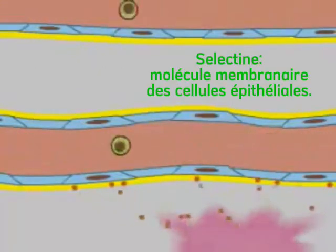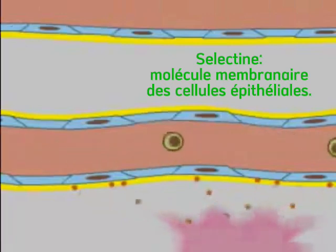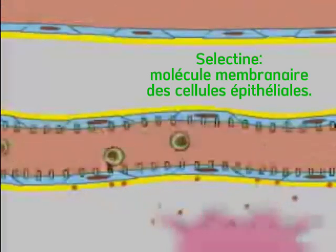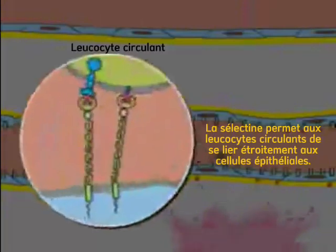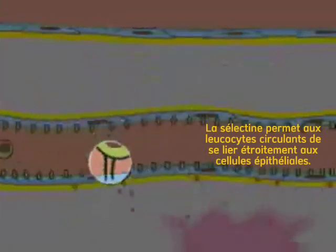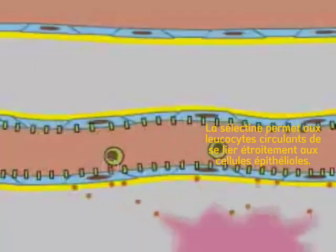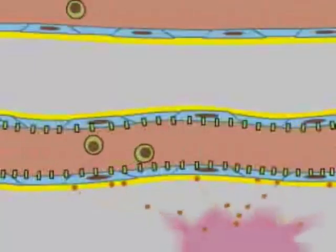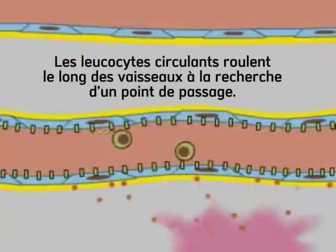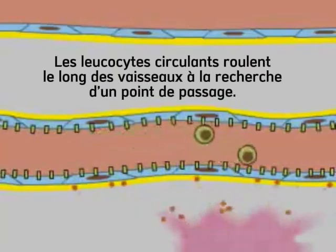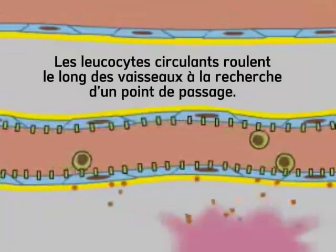The endothelial cells then express surface proteins called selectins. Selectins bind to carbohydrates displayed on the membrane of the leukocytes, causing them to stick to the walls of the blood vessels. This binding interaction is of sufficiently low affinity that the leukocytes can literally roll along the vessel walls in search for points to exit the vessel.